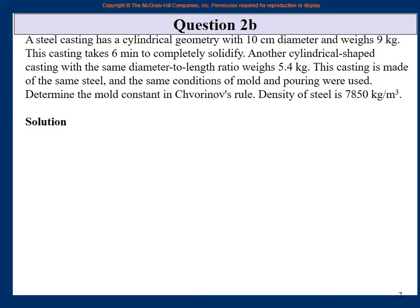Question 2b: A steel casting has a cylindrical geometry with 10 cm diameter and weighs 9 kg. This casting takes 6 minutes to completely solidify. Another cylindrical casting with the same diameter-to-length ratio weighs 5.4 kg, made of the same steel under the same mold and pouring conditions. Determine the mold constant in Chvorinov's rule. Density of steel is 7850 kg/m³.